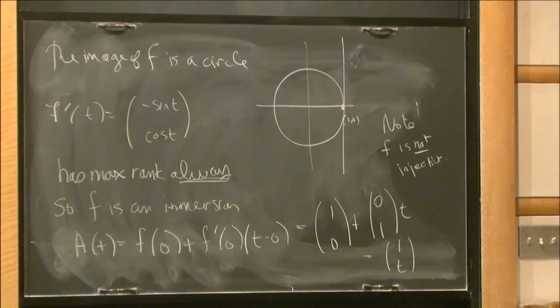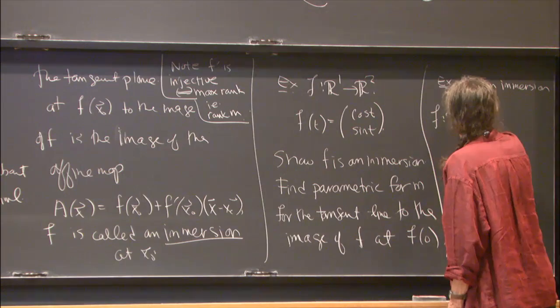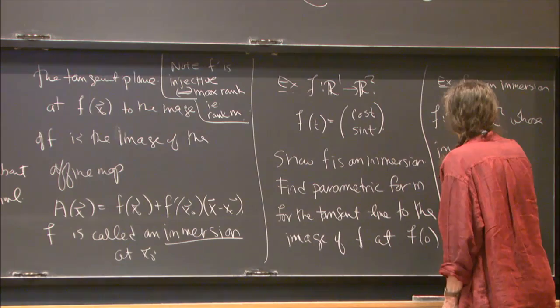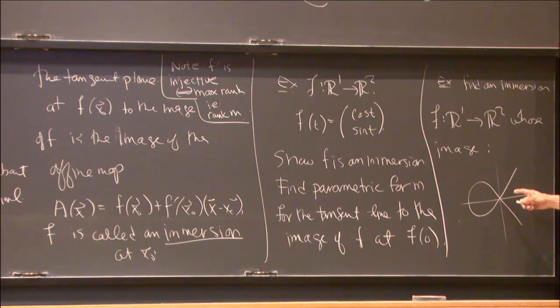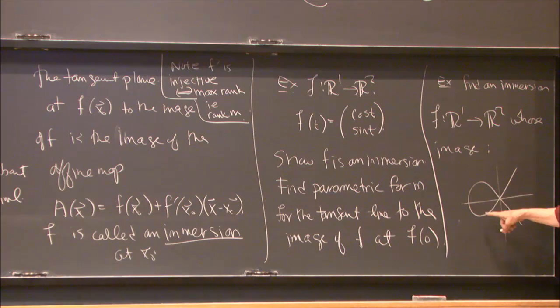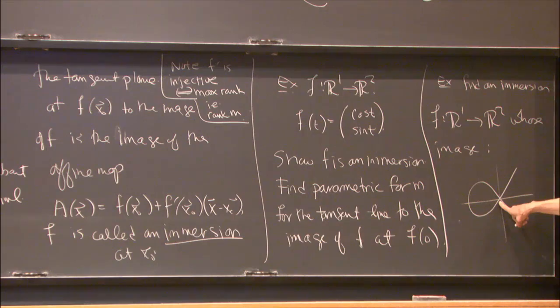Here's another example from the exercises: find an immersion f from R¹ to R² whose image looks like a figure-eight. The key point is that the image of an immersion does not have to be a smooth curve — you can write down an immersion whose image crosses over itself. It's not a manifold at the crossing point. The image of an immersion is not necessarily a manifold.